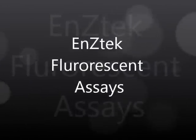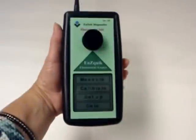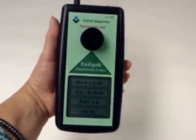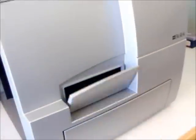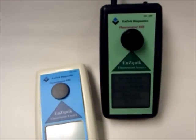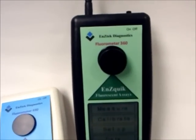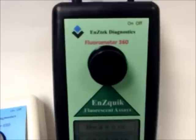The Enzatec Fluorescent Assays can be performed on handheld fluorometers or tabletop fluorometers. It is important for the fluorometer to have the correct wavelength emission and excitation which is specific to each assay.